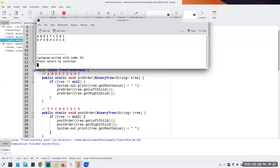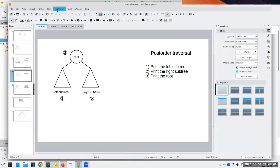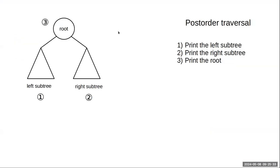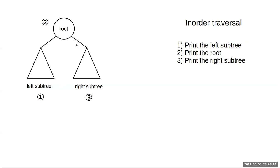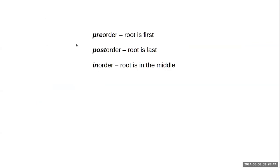That's two of the three main traversal methods — pre-order and post-order. The last one is called in-order, where we print the left tree first, then the root, then the right subtree. The names tell you where the root goes: pre-order means the root is first, post-order it's last, in-order the root is in the middle.